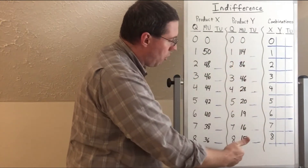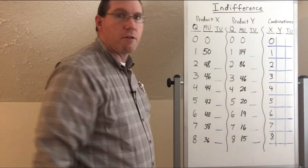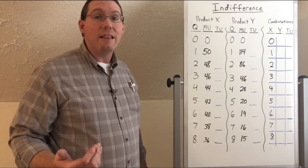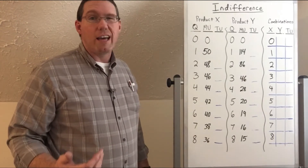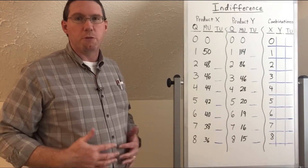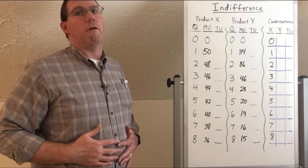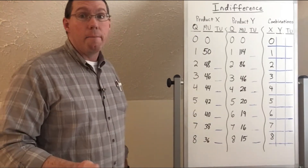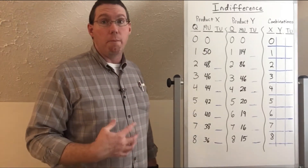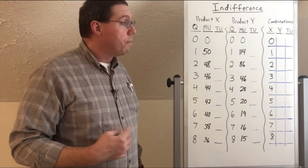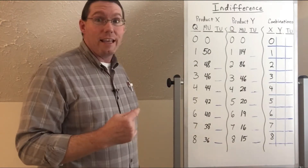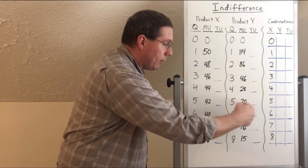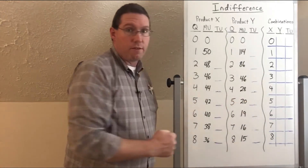Why are they jumping so much? Probably because slices of pizza are kind of large, and the more you eat them, the crummier you feel. If you eat too much pizza, you feel like you've eaten too much. That negative feeling of being bloated from eating too much food is negative utility, and it's already accounted for in these numbers.